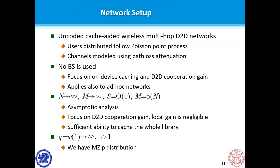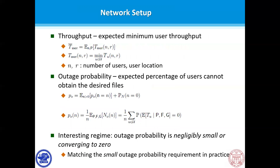We generally consider the n-Zipf model for the popularity distribution. We consider that gamma is greater than 1 and that the plateau factor Q goes to infinity. The reason is that if the plateau factor is a constant while N goes to infinity, the distribution would generally behave like a Zipf distribution asymptotically. Also, as a matter of practice, gamma greater than 1 has been found in real-world data sets. Since we assume a Poisson point process, the number of users in a network is a random variable. We consider the expected minimum user throughput as the definition of user throughput. The outage probability becomes the expected percentage of users that cannot obtain the desired file. We focus on regimes where the outage probability is negligibly small or converging to zero, corresponding to small outage probability requirements in practice.